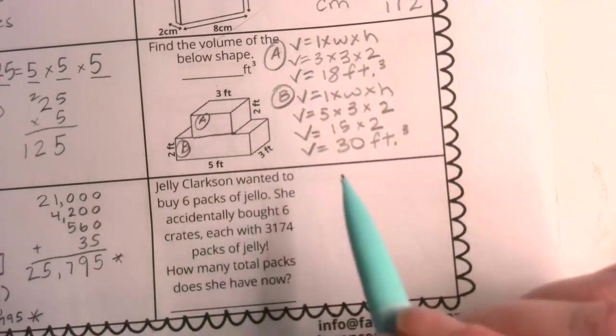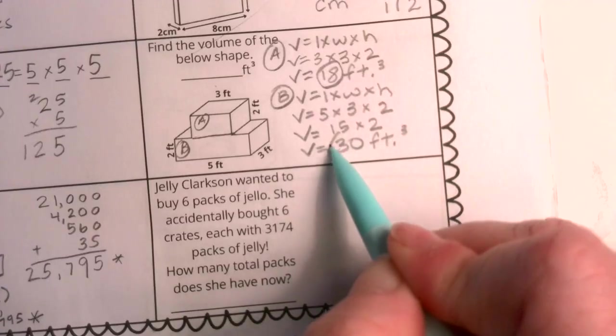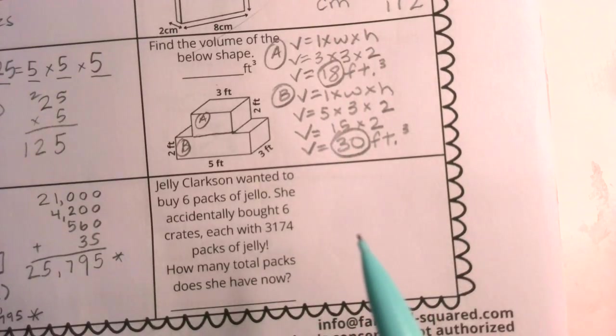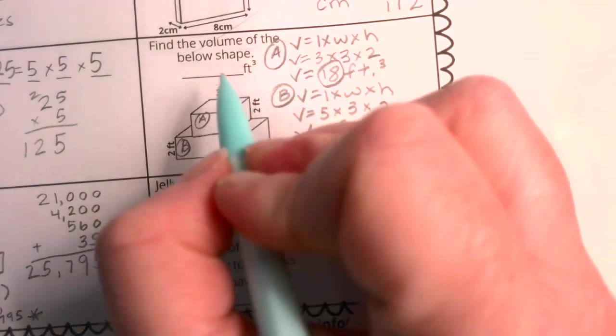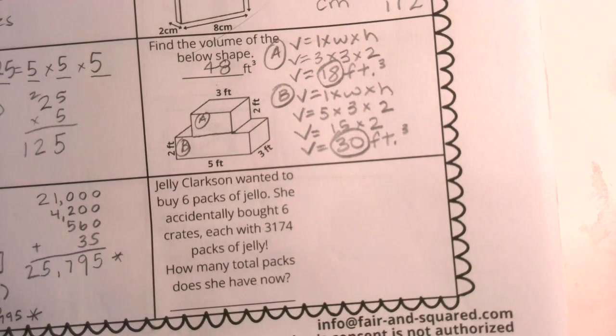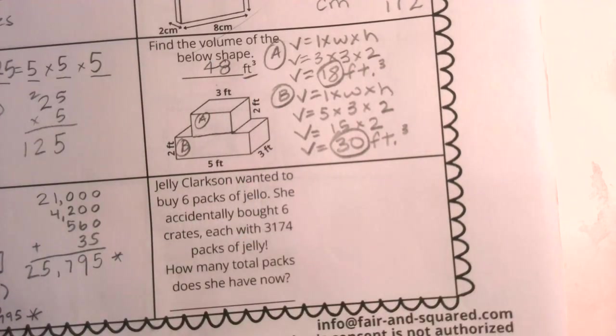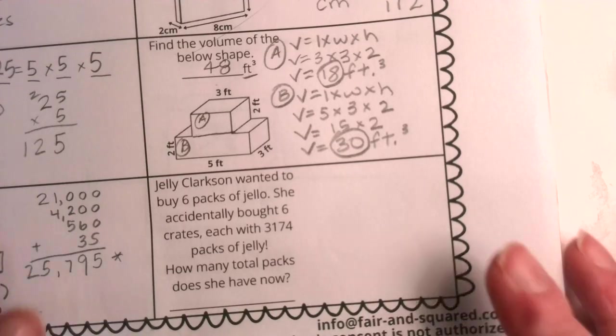Notice, after all of this work, I'm still not to my answer. I have an 18 here and a 30 here. This needs to be combined together with addition. I'm going to write your final answer here. I know that 18 plus 30 is 48, and they have already listed for us, that is cubic feet. Lots of volume that we just considered.